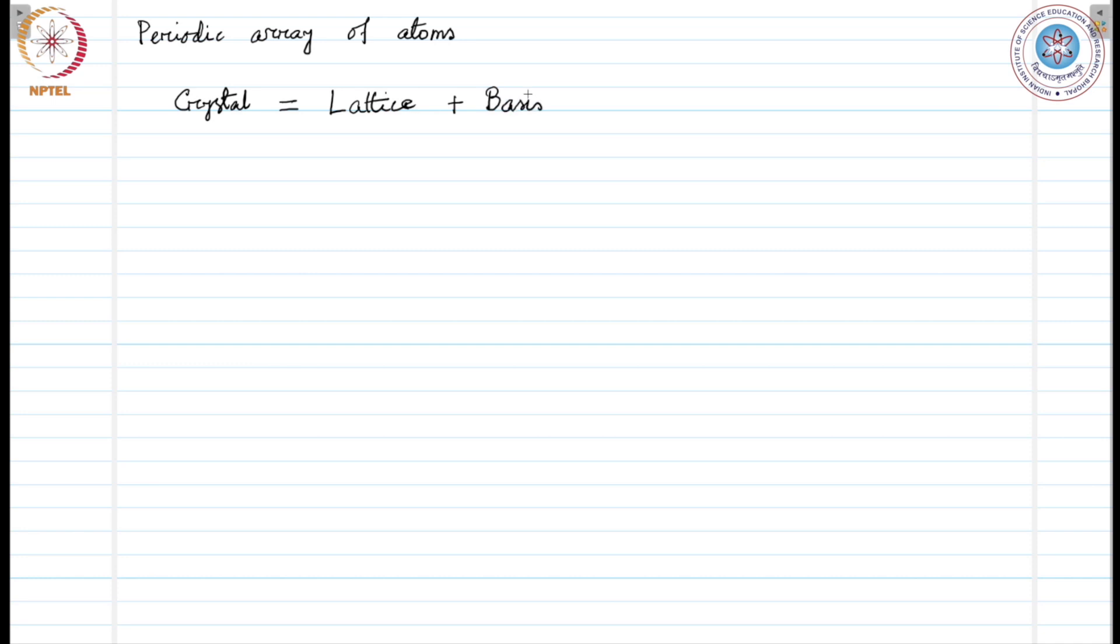Now, basis is a group of atoms. This is not the kind of basis that you know in the context of vector space. It's just a group of atoms. So, how do we define lattice?